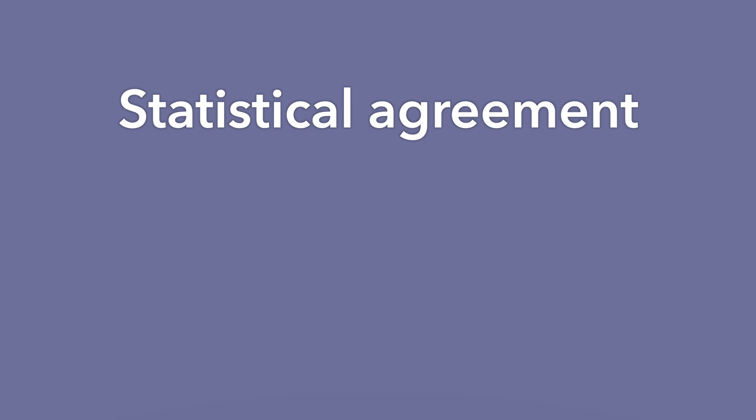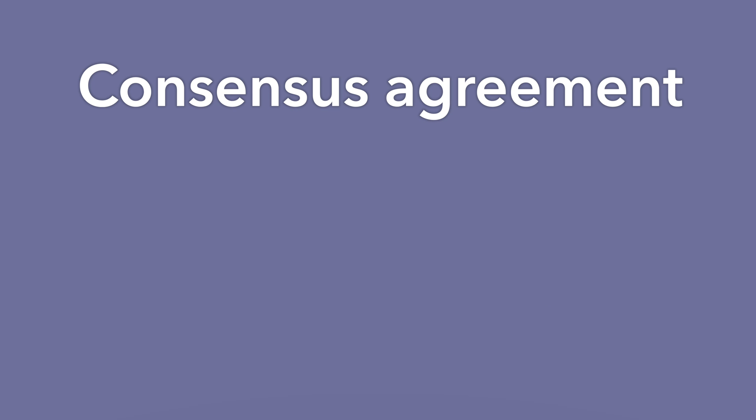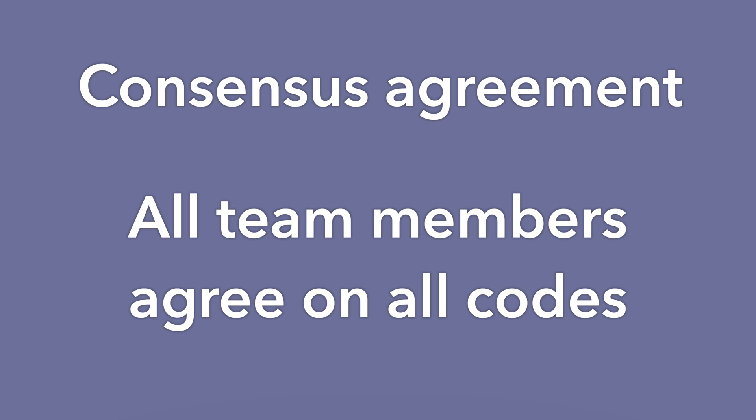There are sort of two basic kinds of agreement, though it's essentially a spectrum and options exist in between. In terms of processes to achieve agreement, there's statistical agreement — where you get your kappa above 0.7 or your percent agreement above 90% — and then there's consensus coding, in which all team members agree on the codes for everything.